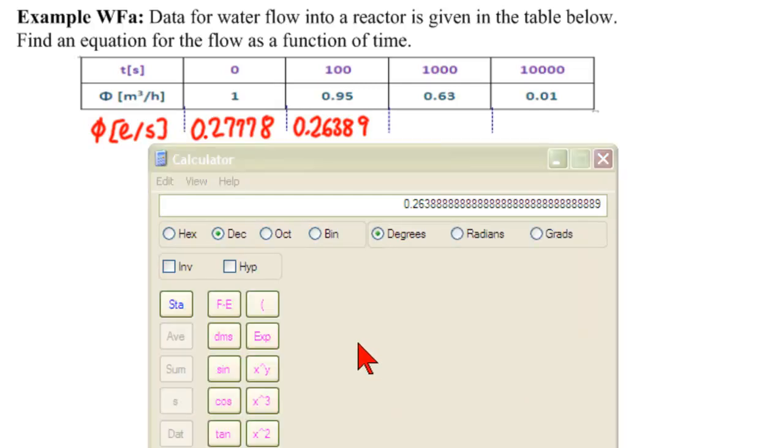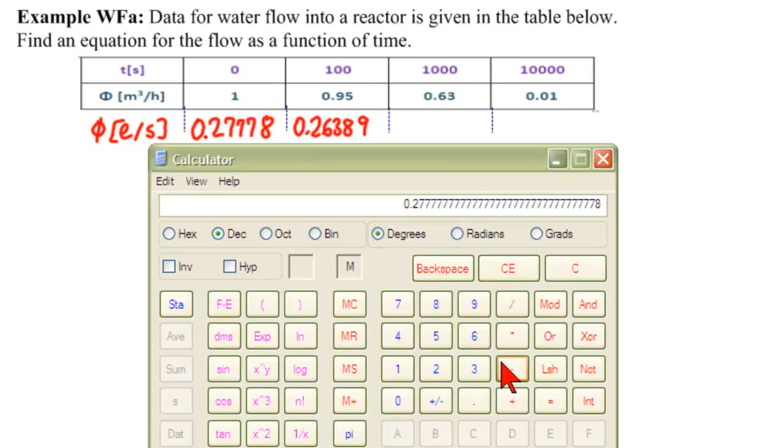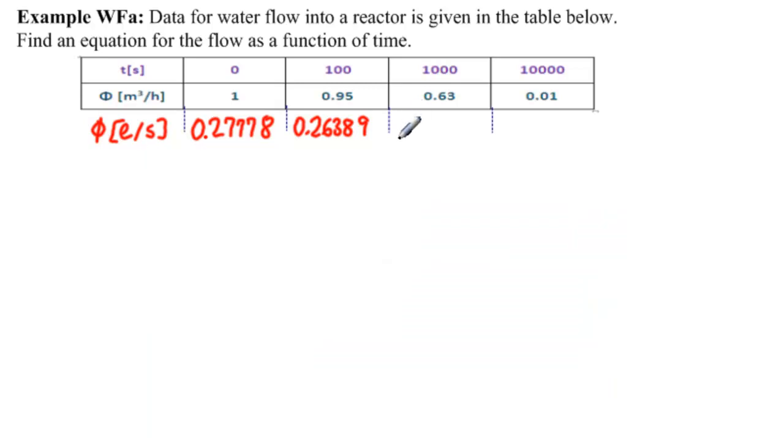memory recall times 0.63 is 0.175, 0.175.